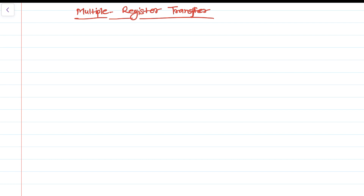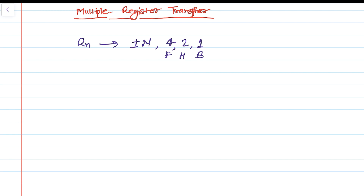The transfer occurs from the base address register pointed to by Rn, and then it just keeps increasing or decreasing by some value — preferably 4, 2, or 1. It is 4 in case of a full word, 2 in case of a half word, and 1 in case of byte-aligned multiple register transfer.